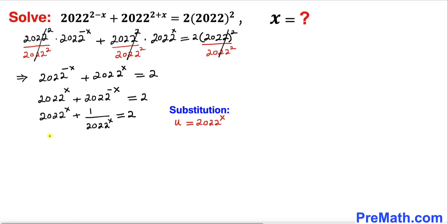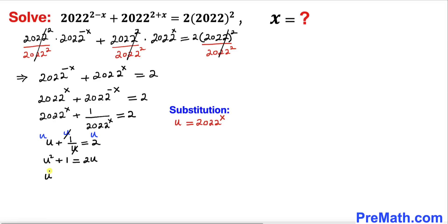Then our equation can be written as u plus 1 divided by u equals 2. Let's remove this fraction by multiplying across the board by u. This gives u times u, which is u squared, plus 1 equals 2u. Moving everything to the left hand side, our equation becomes u squared minus 2u plus 1 equals 0.